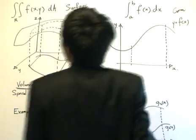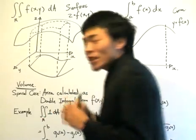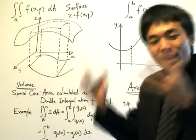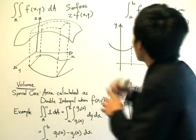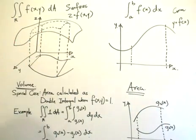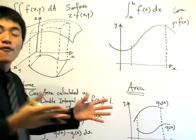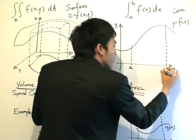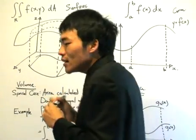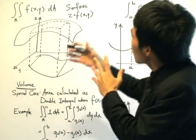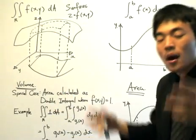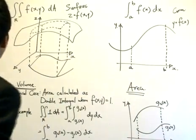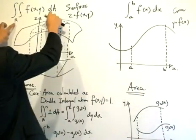The second difference — and I stressed this in previous lessons — is that for the single integral we always integrate from A to B along the x-axis. When dealing with the double integral, we always integrate over the region R, and this corresponds to dA.